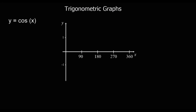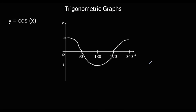Now we're going to look at the graph of y equals cos x between 0 and 360 degrees. Like sin x, we've got a wave. This time we're starting at (0, 1) — the cos graph starts at 1. It goes down, crossing the x-axis at 90, has a minimum at (180, -1), goes back up through the x-axis at 270, and we've got another maximum at 360. That's the cosine graph between 0 and 360.